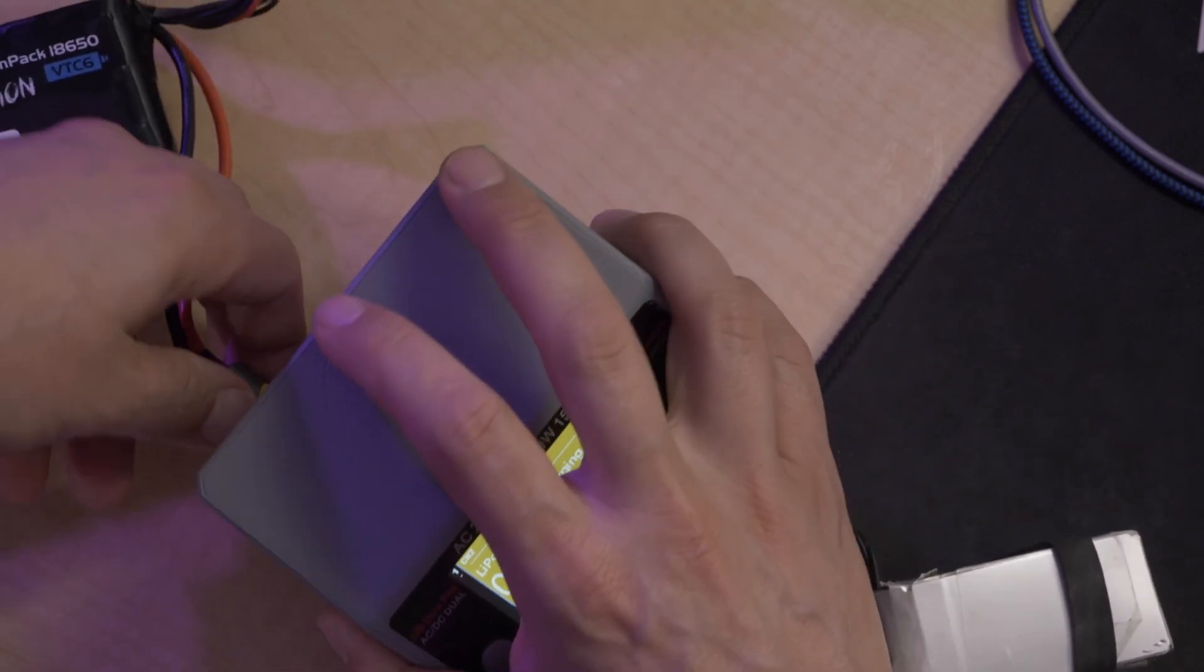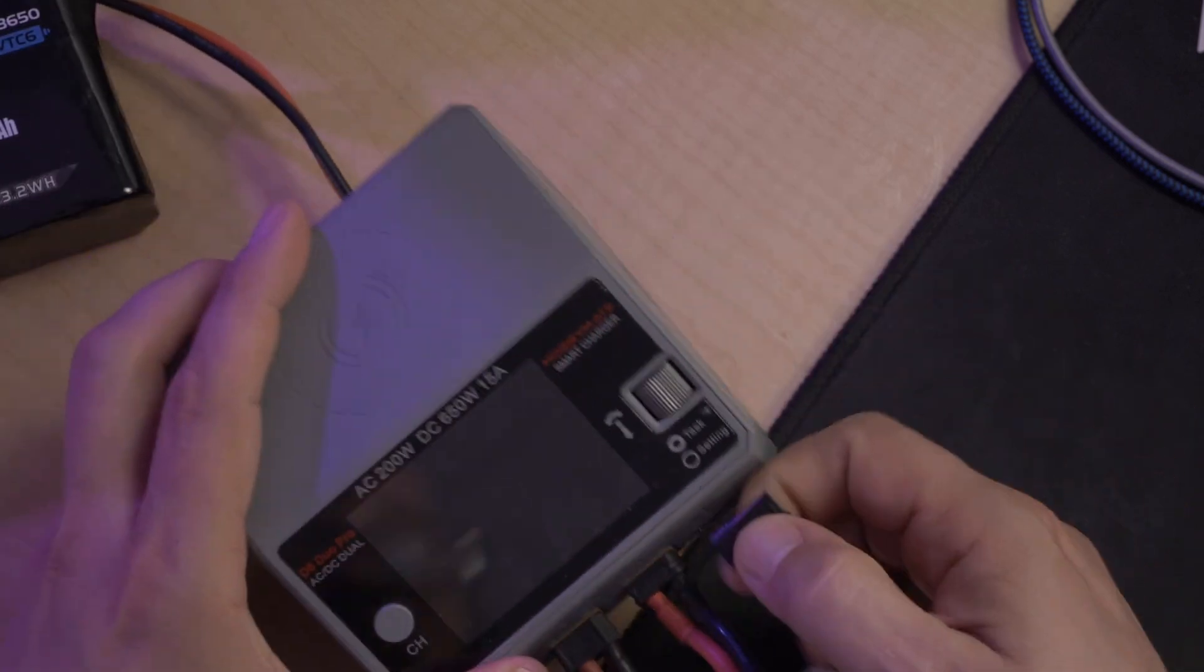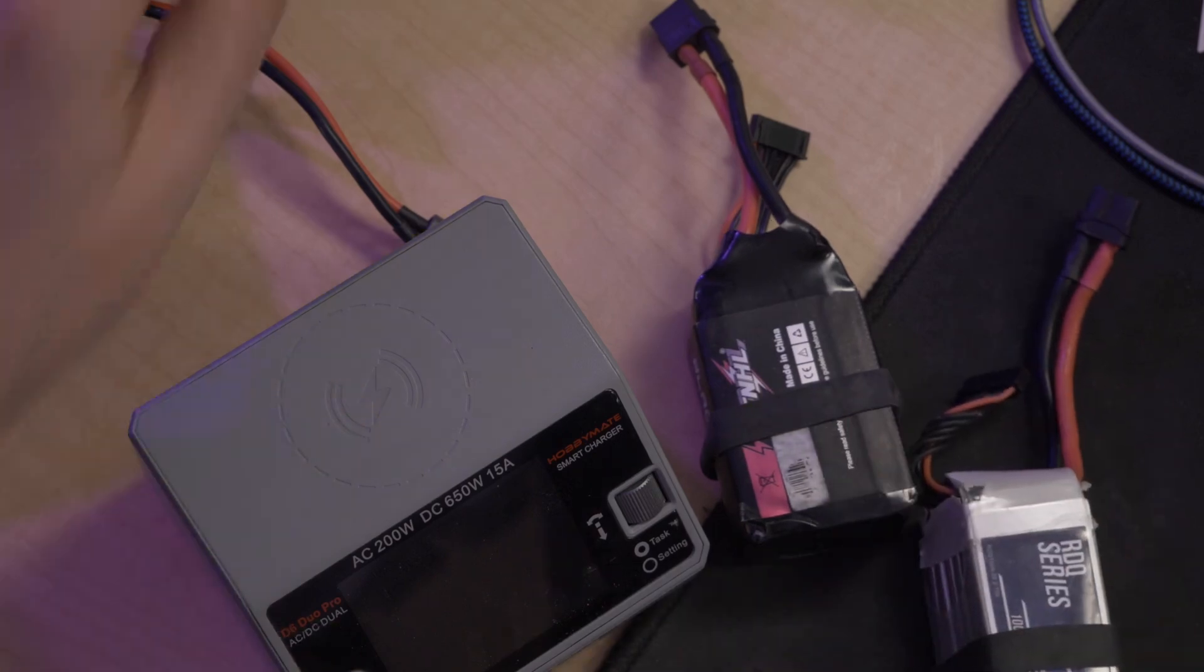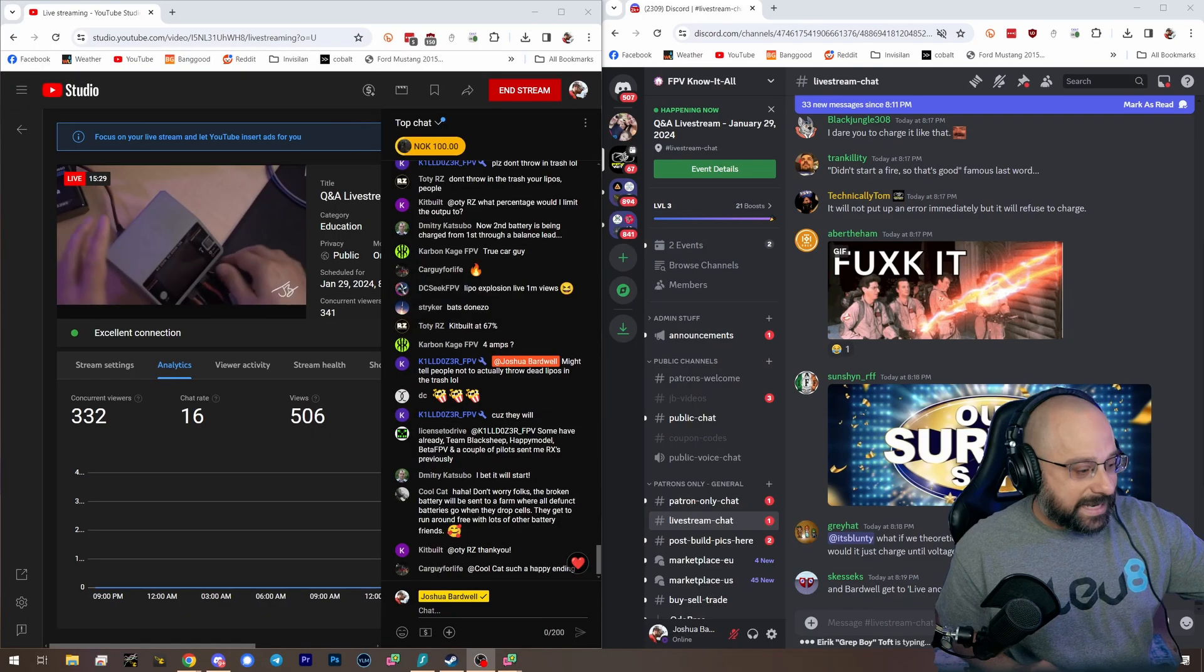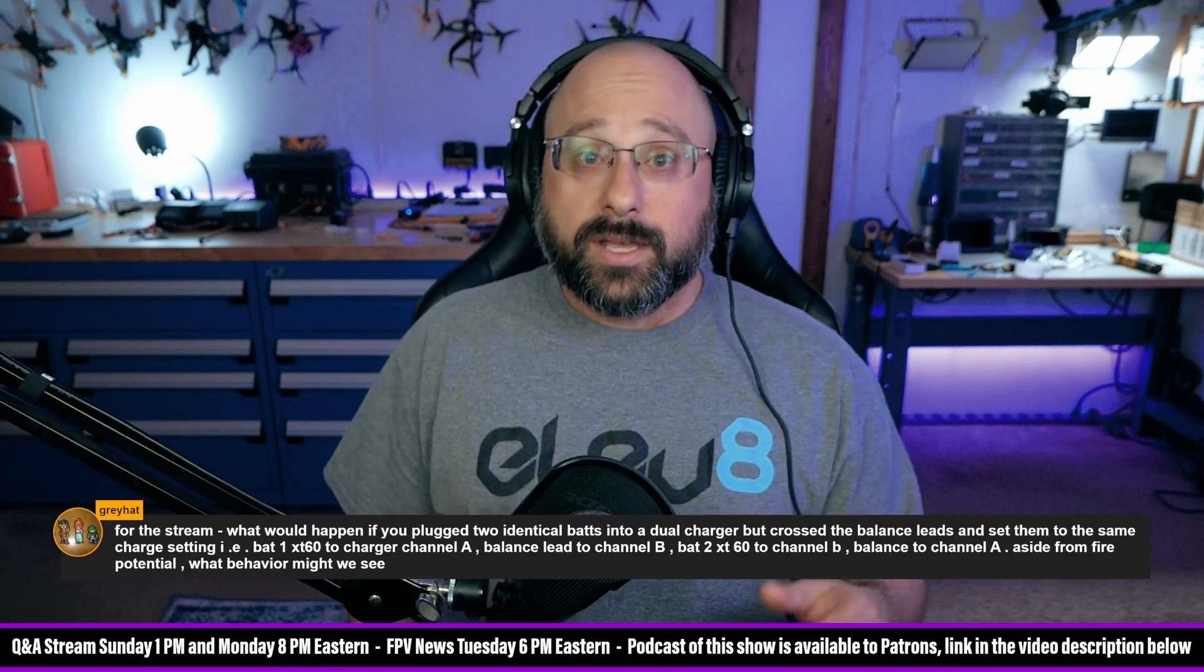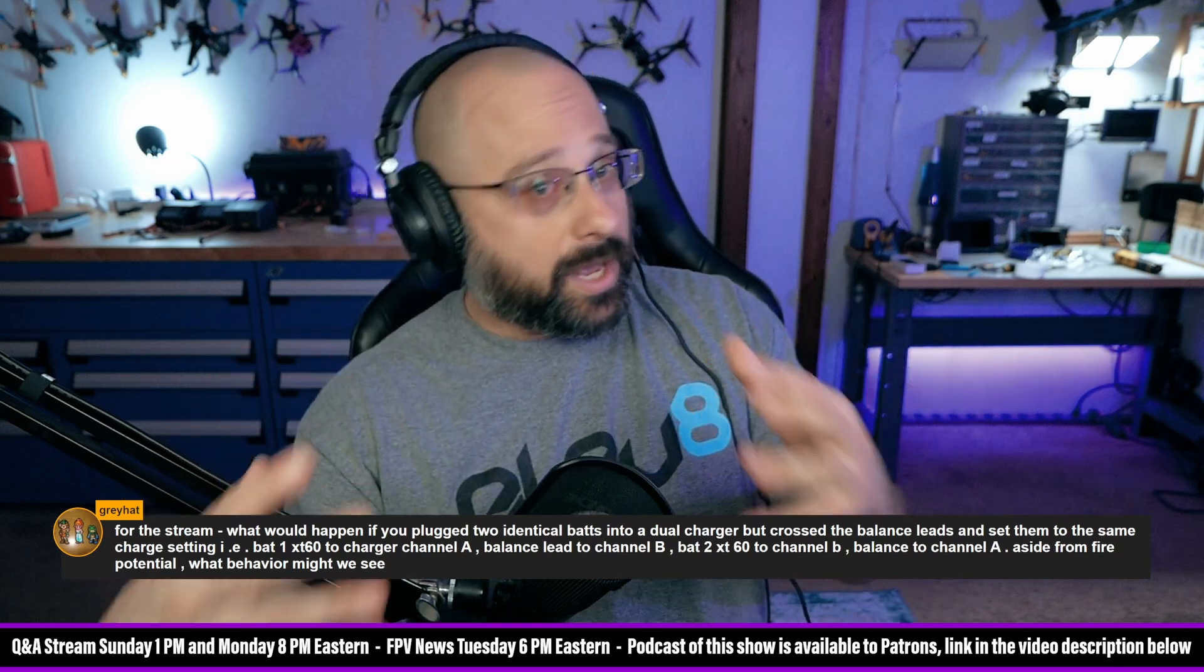So there you go. Now GrayHat asks the next logical question: what if we managed to make it identical voltages? Would it try to charge it? I think it would, but very quickly the voltages would go out of sync because one of the batteries would start charging up and the other one would not, or they would not charge at the same rate. As soon as the voltages went out of sync, the charger would be like, 'something isn't right here.'